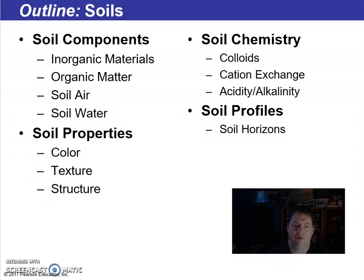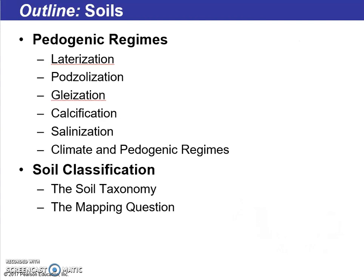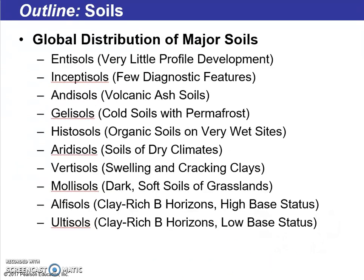Here's our general outline for the chapter: components including organic and inorganic matter, living and non-living, soil air and water. Soil properties include texture, color, and structure. We'll also talk about colloids, cation exchange, acidity, alkalinity, and soil horizons. We'll cover pedogenic regimes including lateralization, podzolization, gleization, calcification, salinization, climate and pedogenic regimes, and finally soil taxonomy and classification.